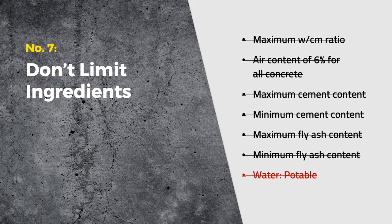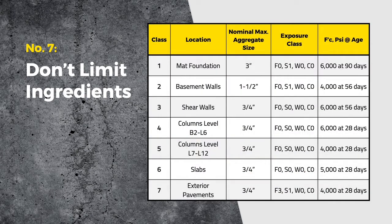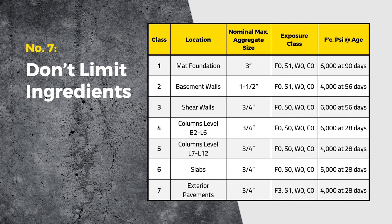Do not limit water used for making concrete to potable water — there is an ASTM specification for water used to make concrete. My recommendation is to provide a table in your specification listing the important performance attributes for concrete; each project will have different values depending on project requirements. For example, Class 7 concrete for exterior pavements would have a water to cementitious materials ratio and air content limit because of its exposure to freezing and thawing, as spelled out in ACI 318 and ACI 301. Concrete that will not be stressed for significant time periods can be tested at later ages, allowing higher volumes of SCMs and resulting in a lower carbon footprint.